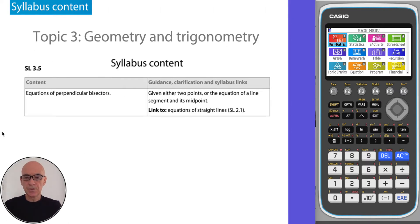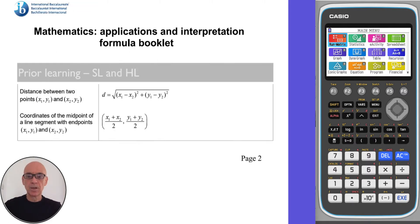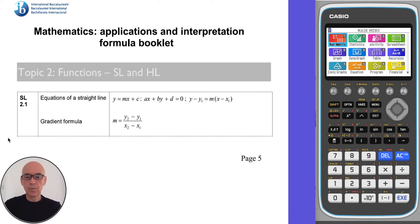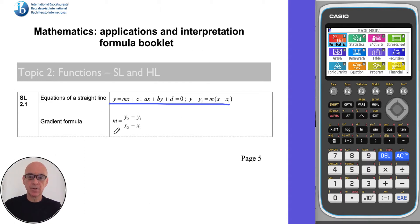You will also need to know how to find the equation of a perpendicular bisector. The formula for the coordinates of the midpoint of a line segment is given on page 2 of your formula booklet, and the formulas for the equations of a straight line and the gradient of a straight line are given on page 5 of your formula booklet.